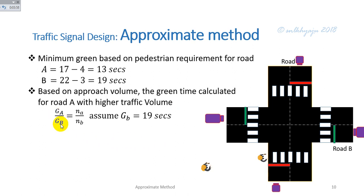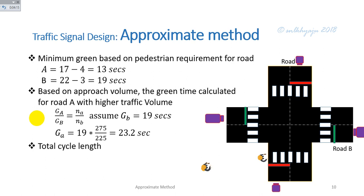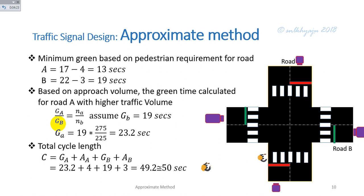Based on traffic volume, the green times are adjusted using the ratio GA divided by GB equals NA divided by NB. Considering the green time for Road B as 19 seconds, the green time for Road A is calculated as 23.2 seconds. The total cycle length is calculated as GA plus amber A plus GB plus amber B, giving approximately 49.2 seconds, which is rounded to 50 seconds.